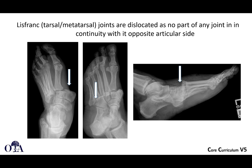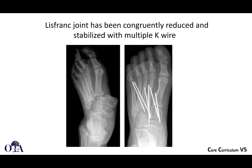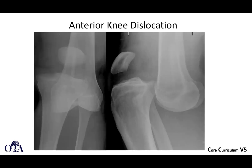Here's an example of Lisfranc injuries in the midfoot, where the Lisfranc joints are completely dislocated — there's no part of any joint in continuity with its opposite articular side. This is a midfoot dislocation. On one view, you can see those joint surfaces have been reduced into some kind of congruity and stabilized with wires.